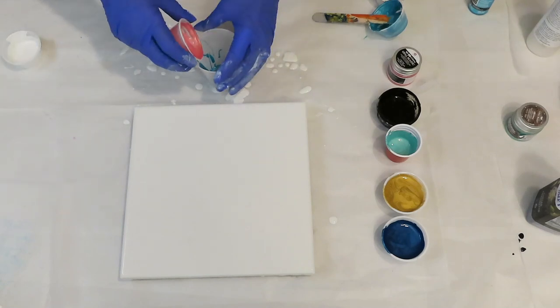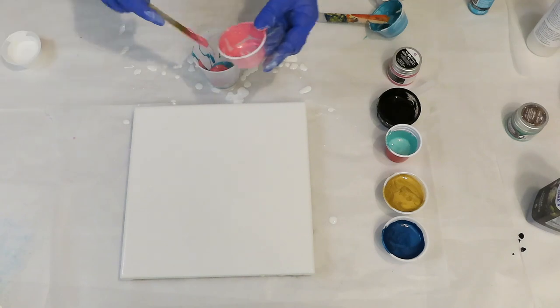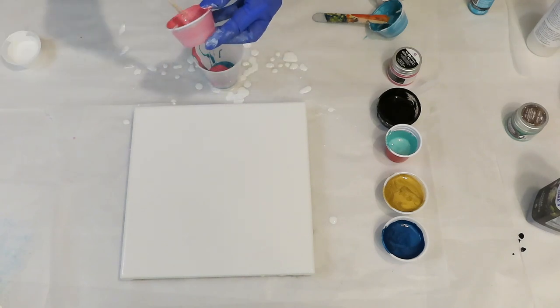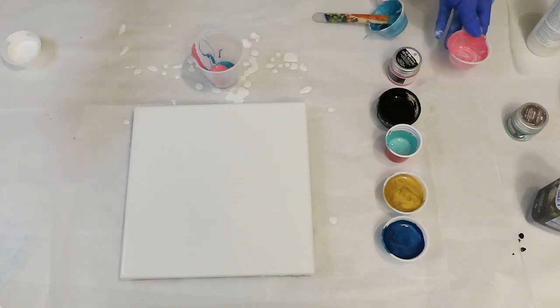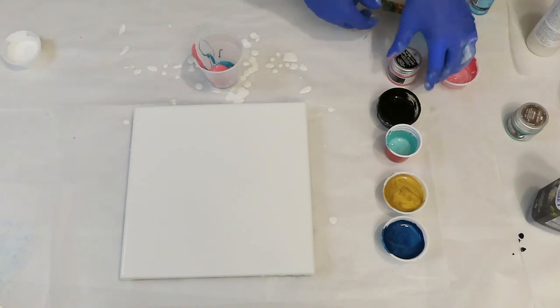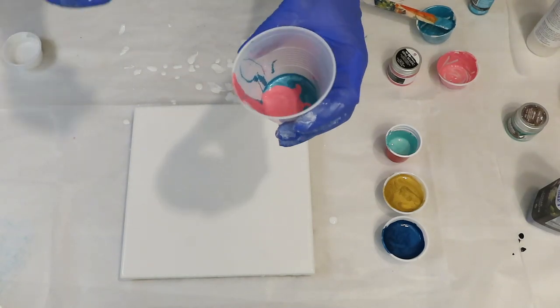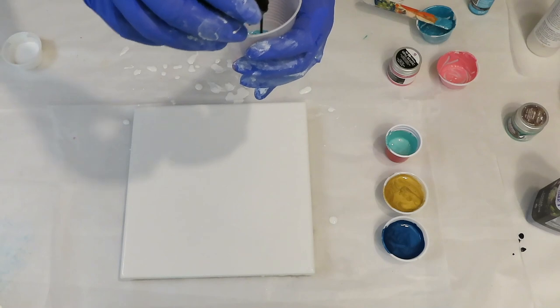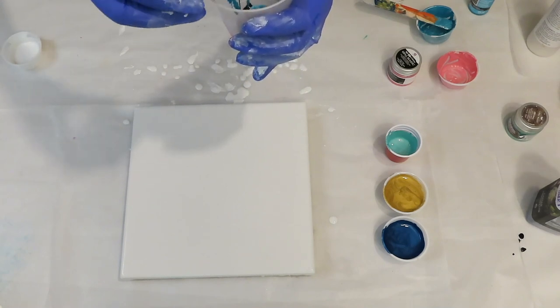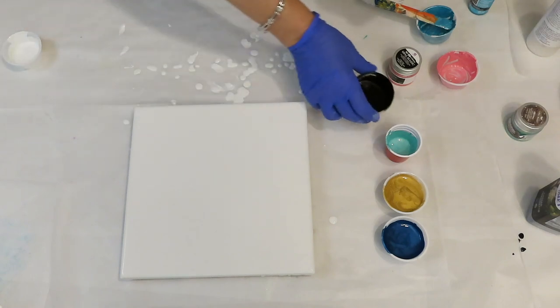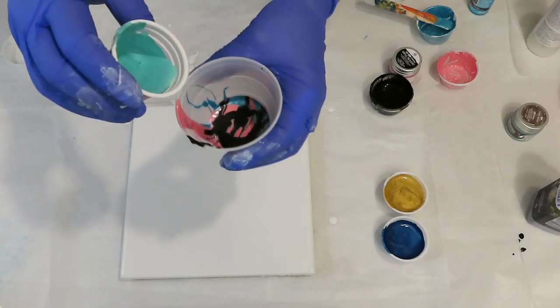This is that color, the pink. This does have silicone in it also. I didn't want to use the whole container, because I just wanted to test it out first, before I use it all. This is the cell activator. Just pour that just right over the top. I know how black takes over, but I haven't used a cell activator in a flip cup, so we'll see what happens.